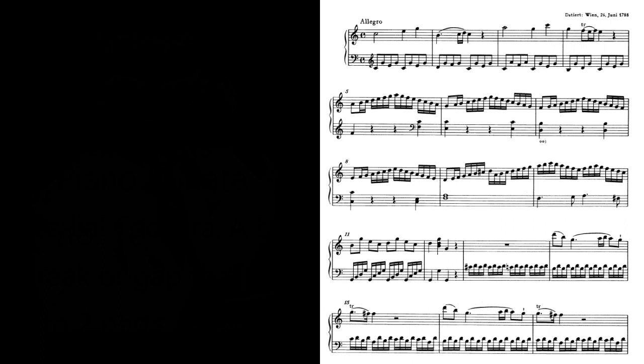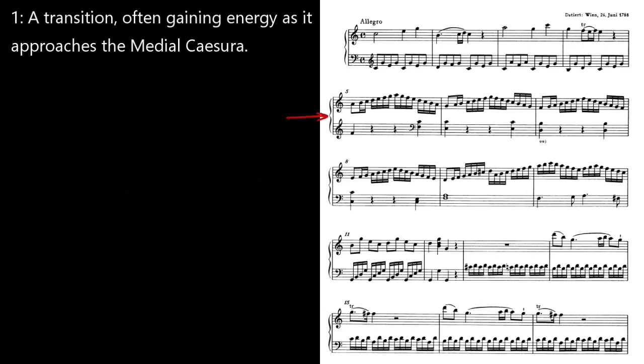On page 30 of the Elements of Sonata Theory, Hepokoski describes four steps leading up to the MC. First, we have a transition, often gaining energy as it goes along, which we can see here in 545. Although the harmonic rhythm is more or less the same, certainly the notated rhythms are faster.